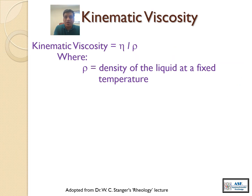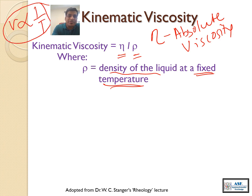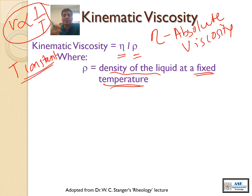This is the formula of kinematic viscosity: eta divided by density. In case of Newtonian liquids, eta is the absolute viscosity. Rho is the density of a liquid at a fixed temperature, and that's very important. Viscosity is dependent on temperature and there is an inversely proportional relationship between viscosity and temperature — we will dig into that more in the next video. So when you are measuring kinematic viscosity, you have to keep temperature constant.